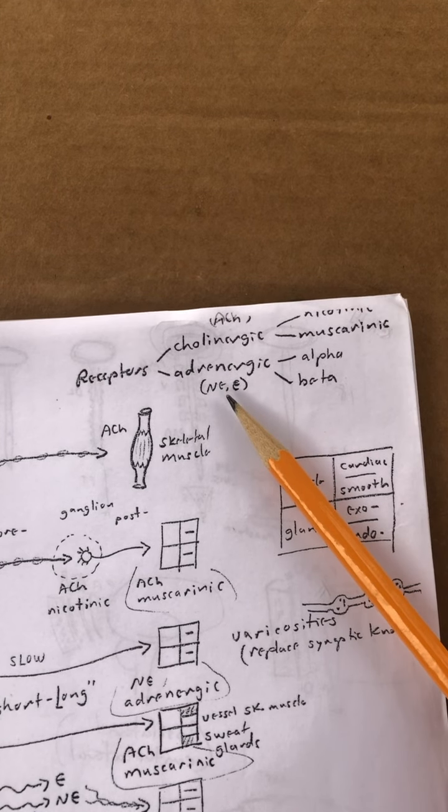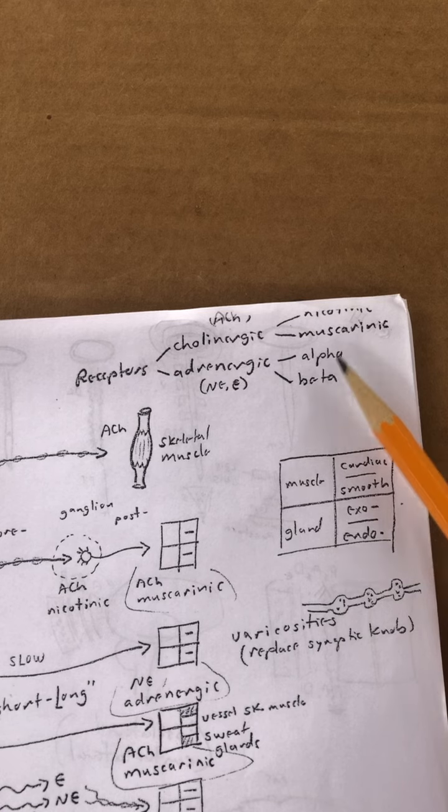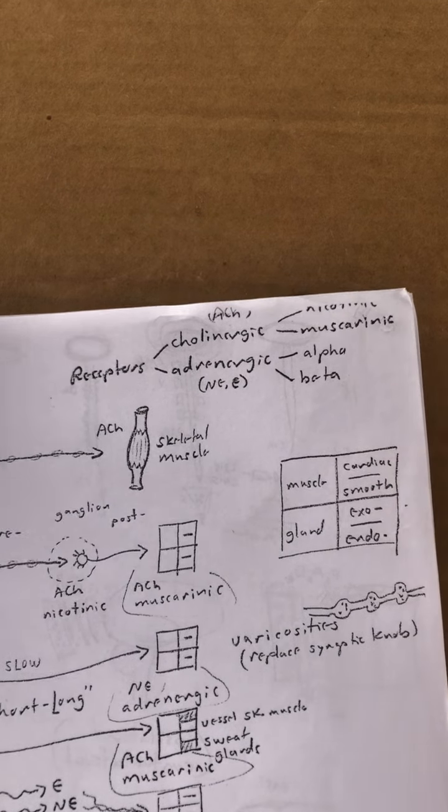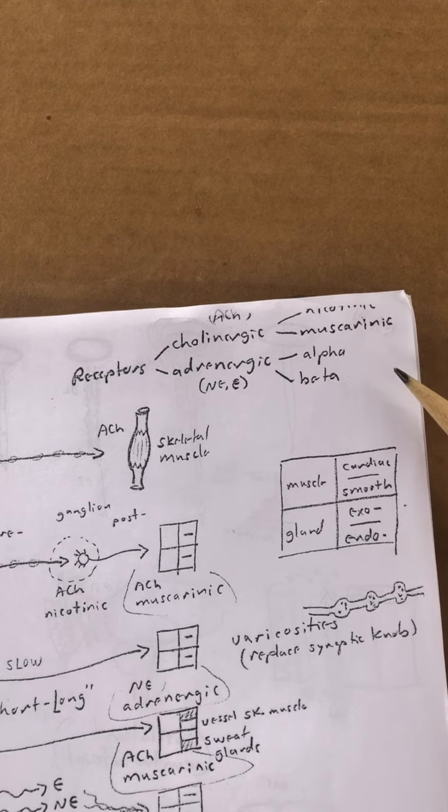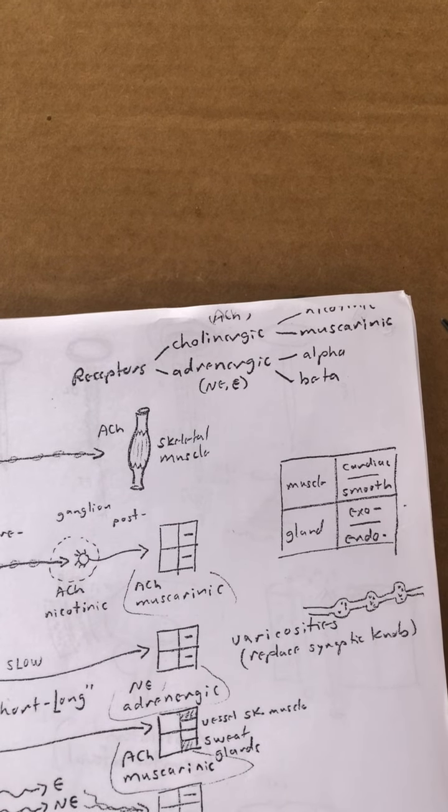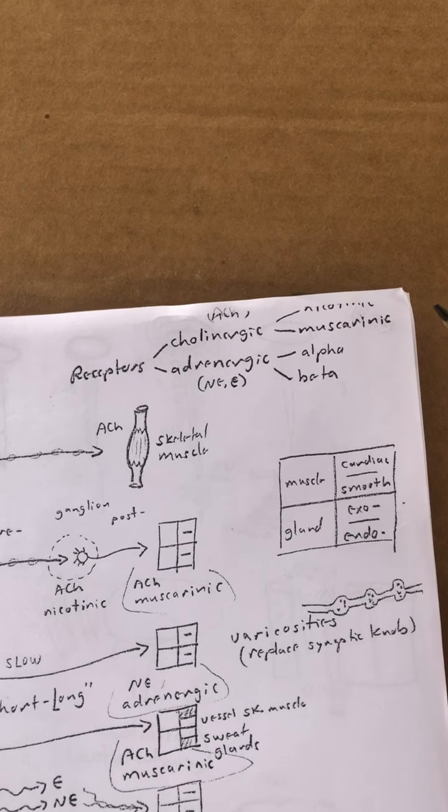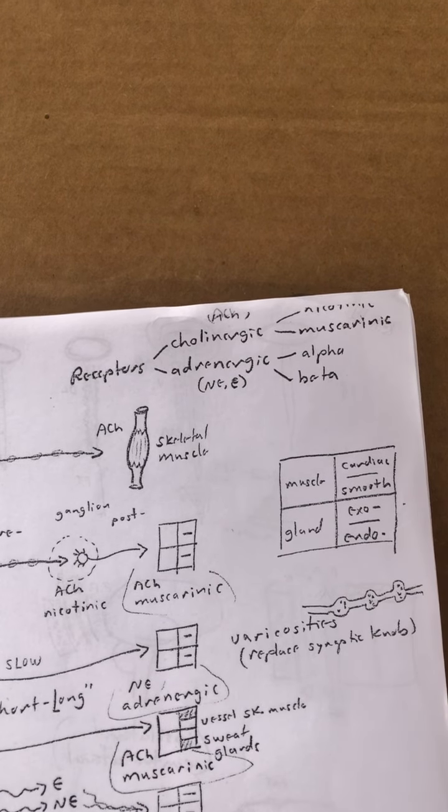Down here with the adrenergic receptors, they're divided into alpha and beta and then further subdivided, say into alpha 1, alpha 2, beta 1, beta 2. And there's a lot of stuff to learn over here, particularly if you're ever thinking about anything in pharmacology, there's a lot of information right here that's going to be really important to you someday.